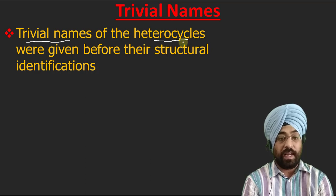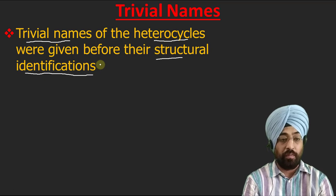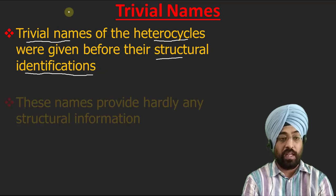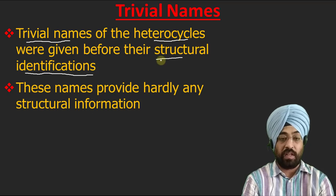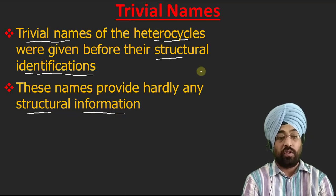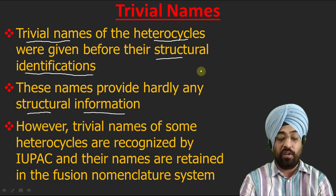Trivial names were assigned to these heterocycles even when their structural identification was not done. Even just when they synthesized a new compound and found some new properties, they had no structural information about that compound, so they gave it a name. Those names are called trivial names. Since the names were given before structural determination, they don't provide any structural information. We cannot tell anything about the structure from a trivial name because there are no rules by which the names were assigned, unlike IUPAC names.